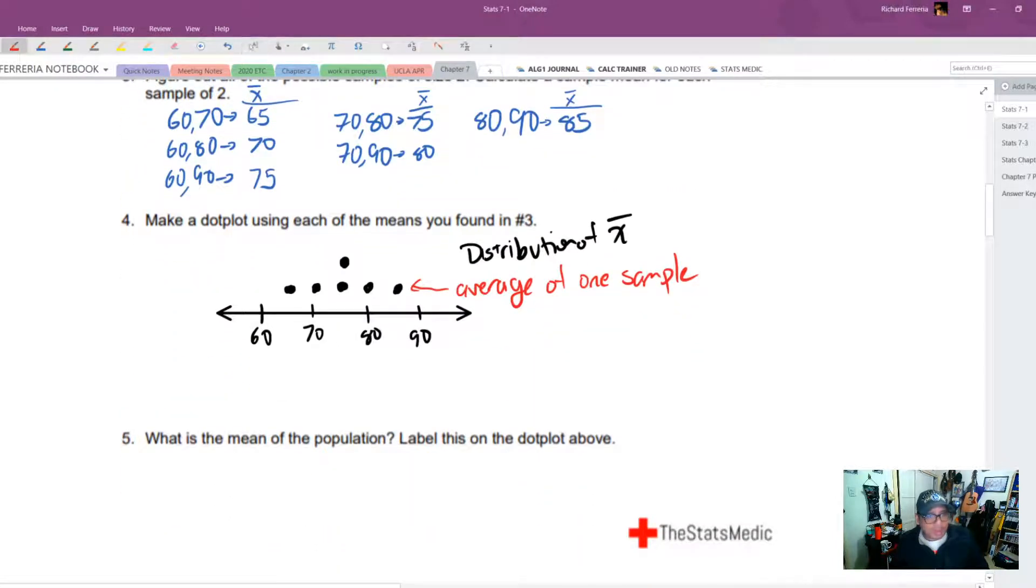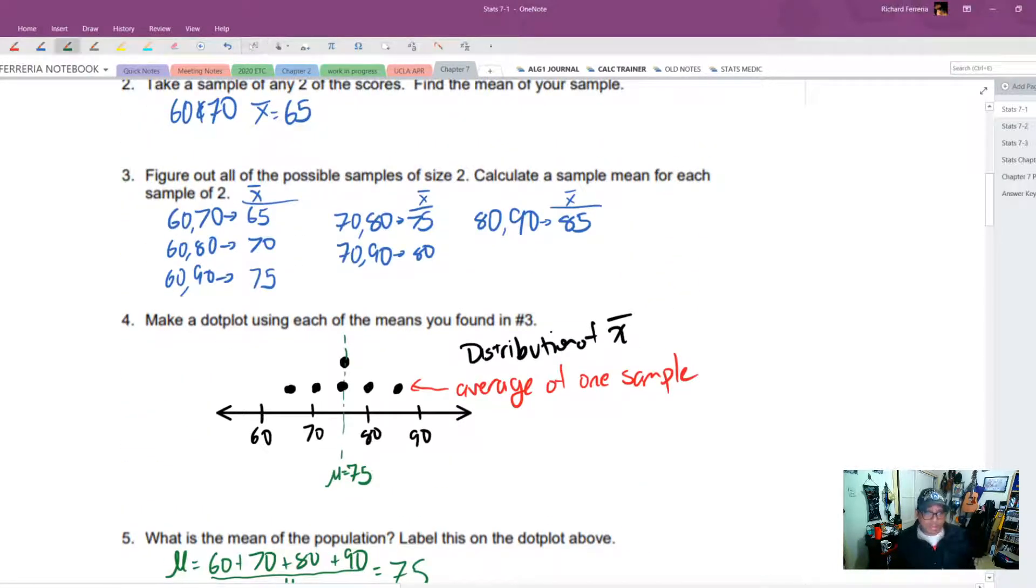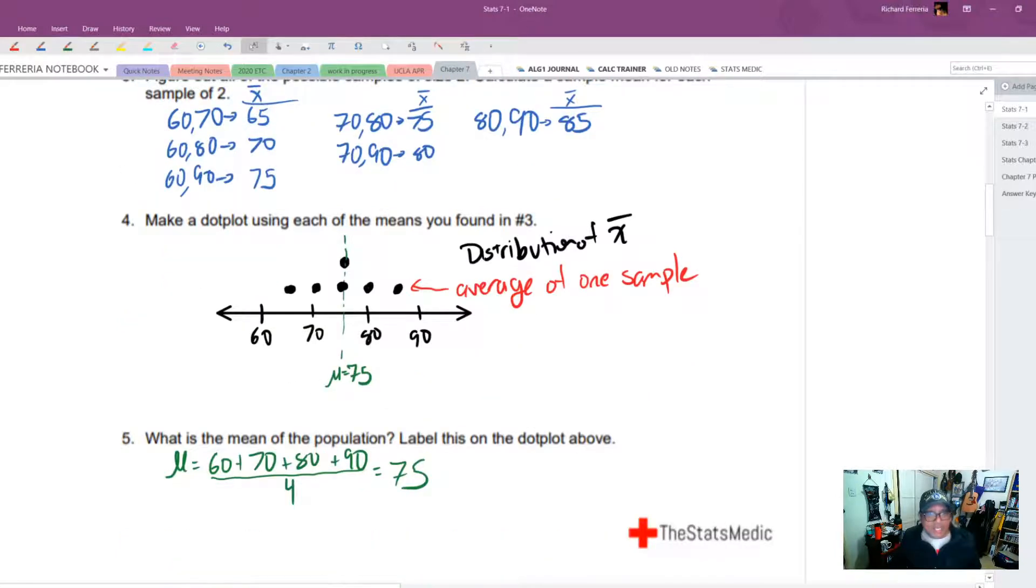Each one of these dots represents the average of one sample. What is the mean of the population? Let's see. The mean of the population, that's called mu, and that's going to be equal to 60 plus 70 plus 80 plus 90, the whole thing divided by four. And wouldn't you know it that that is 75. So we'll just mark that right here. Mu equals 75.